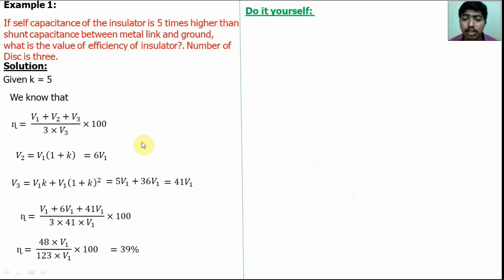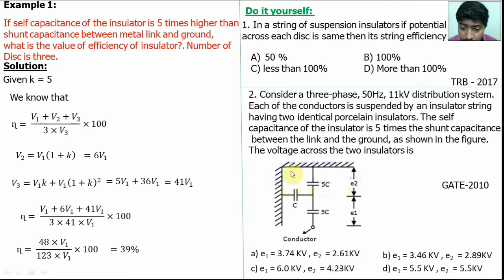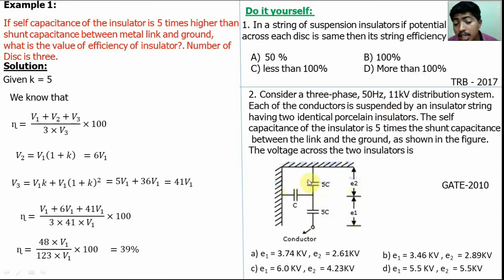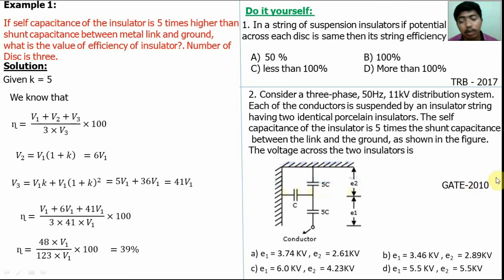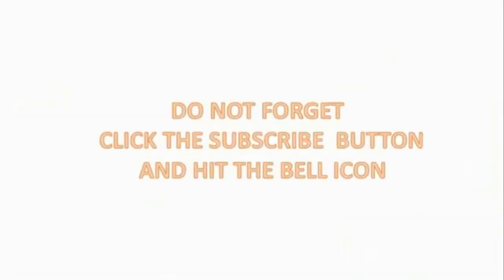Now try these questions yourself: Question 1 (asked in TRB 2017): If the potential across all disks is the same, what will be the efficiency? Question 2 (asked in 2010): For a two-disk insulator, top disk voltage is E2 and bottom disk (near conductor) is E1, connector voltage is 11 kV, self-capacitance is 5C, shunt capacitance is C — find the voltage across the lowest disk. Comment your answers below. Thank you for watching — please subscribe, like, and share.